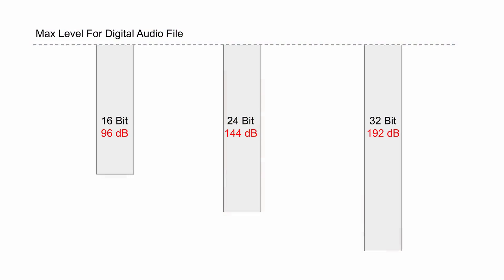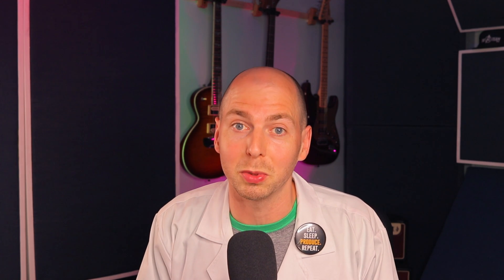We can calculate all this rounding error mathematically. A 16-bit audio file has a maximum dynamic range of 96 decibels. 24-bit audio files capture those 96 decibels and add another 48 decibels, giving 144 dB of dynamic range. And 32-bit audio files can capture 192 decibels — which is completely over the top.